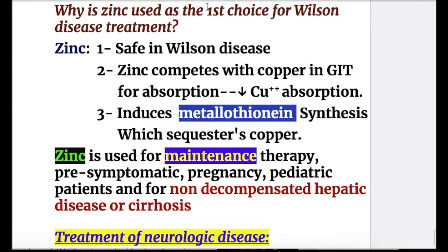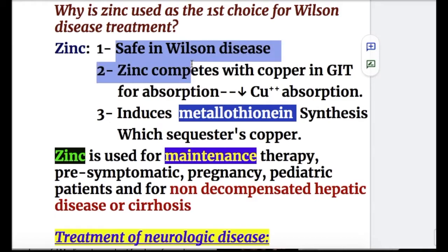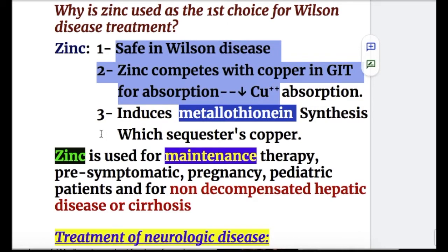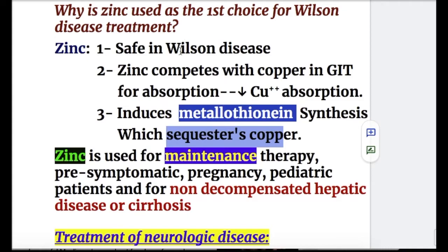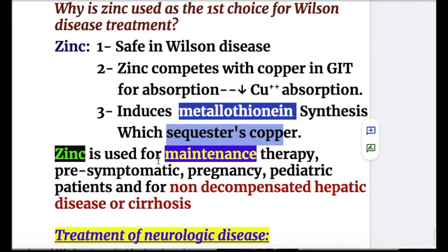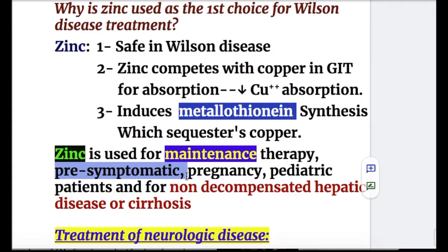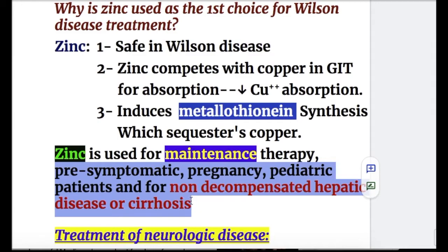Zinc is used as first choice in Wilson disease because it is safe, competes with copper in the GIT to decrease absorption, and induces metallothionein synthesis which sequesters copper. Zinc is also used for maintenance therapy, pre-symptomatic patients, pregnancy, pediatric patients, and non-decompensated hepatic disease or cirrhosis.